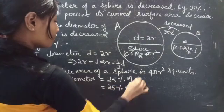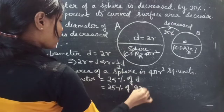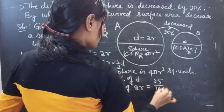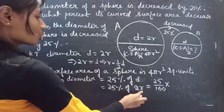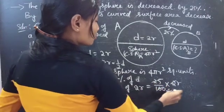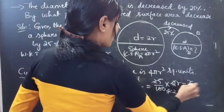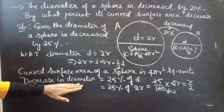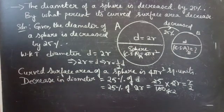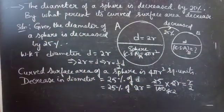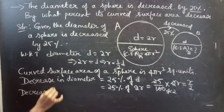Since D equals 2r, the 25% decrease in diameter is 25% of 2R, which equals 25/100 × 2R, and this simplifies to R/2. So the 25% decrease in diameter equals R/2. Now let us find the decreased diameter.